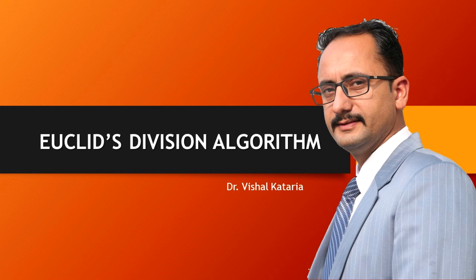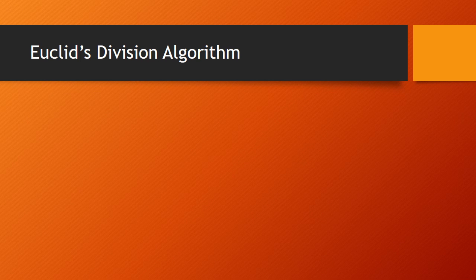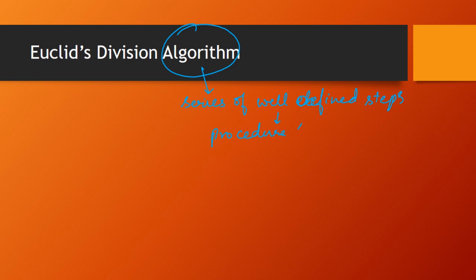Hello everyone. Our today's topic is Euclid's Division Algorithm. Before we proceed further, let's understand the meaning of the term algorithm. Algorithm means a series of well-defined steps which gives us a procedure to solve a type of problem.